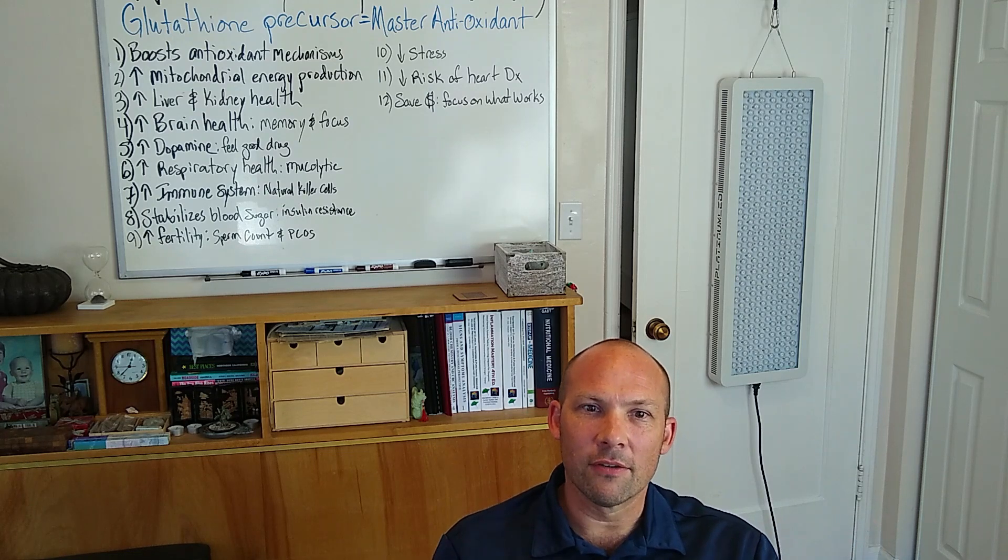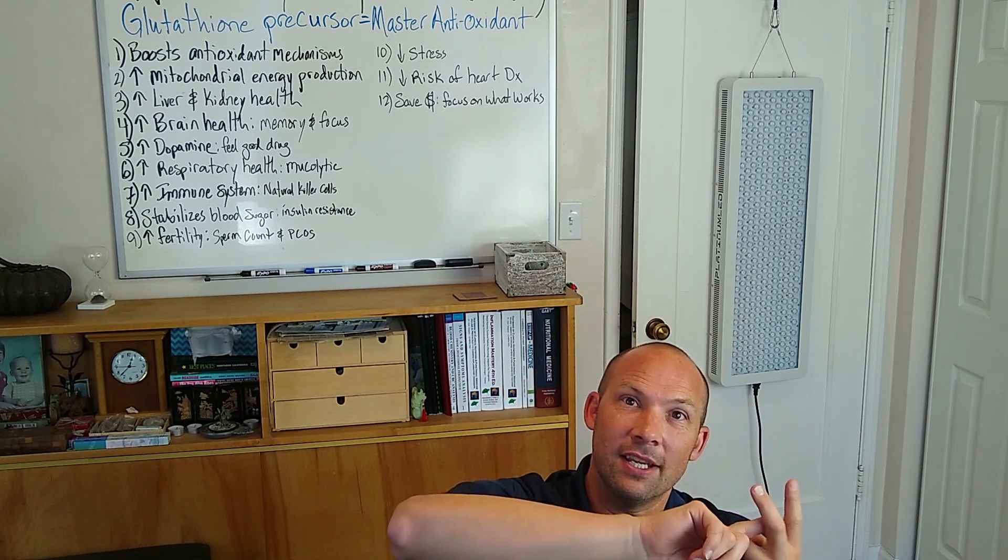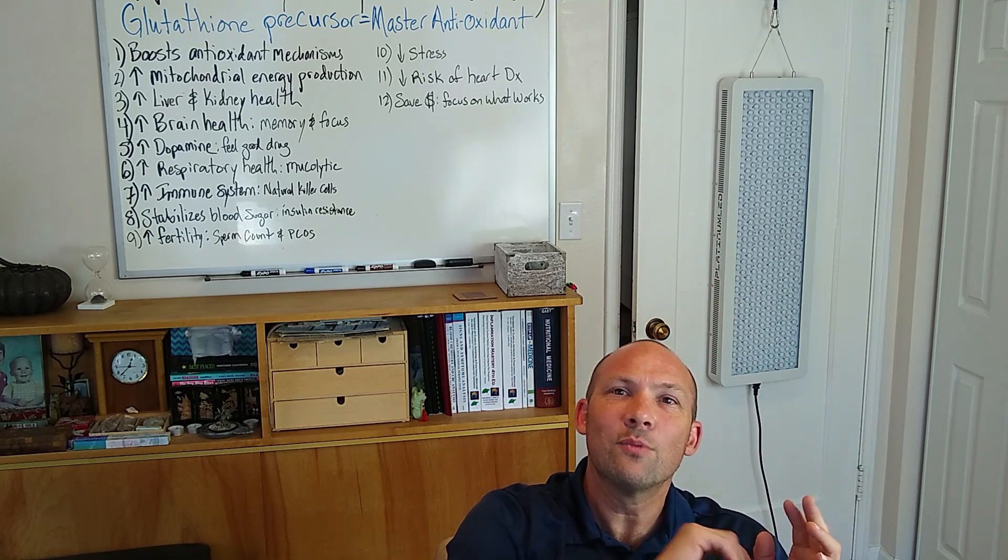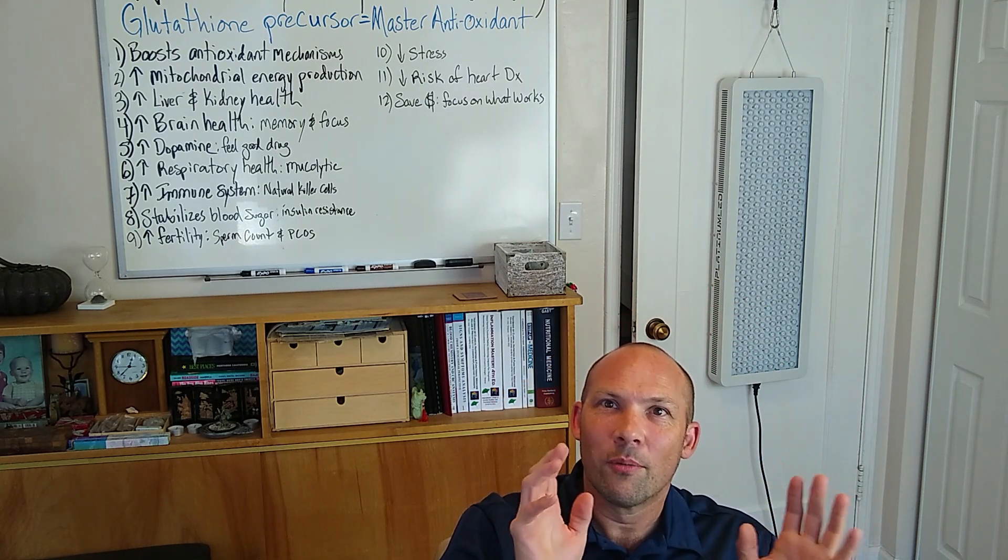So the summary here is it doesn't take much change in your glutathione levels for cells to start to die. This is relevant in particular for diseases like heart disease, diabetes, neurodegenerative diseases, AIDS, as well as just simply normal aging.